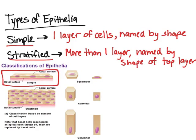The epithelia is named according to the shape of the cells. Since it's only one layer, you only have to worry about the shape of those cells. Squamous is essentially pancake-like — pretty flat. Cuboidal is square-shaped. And columnar is just a column. The shape of the cell determines the name of the epithelia.